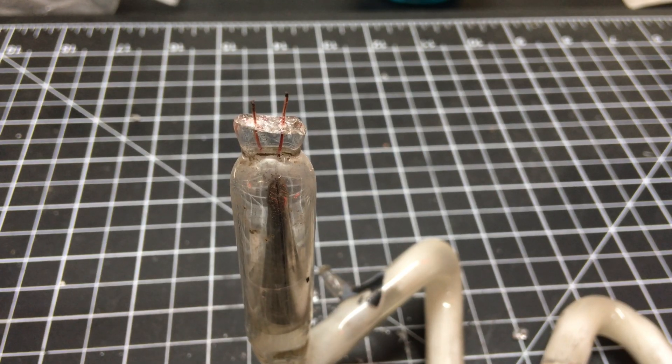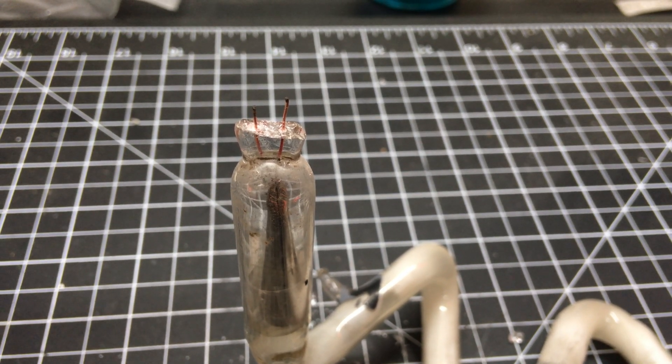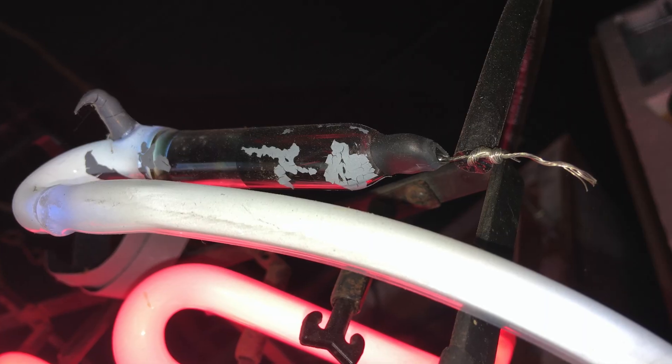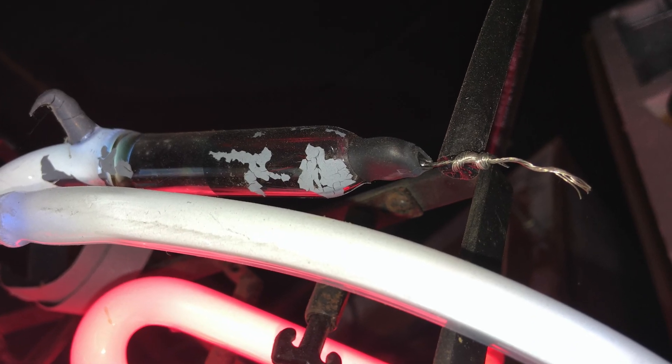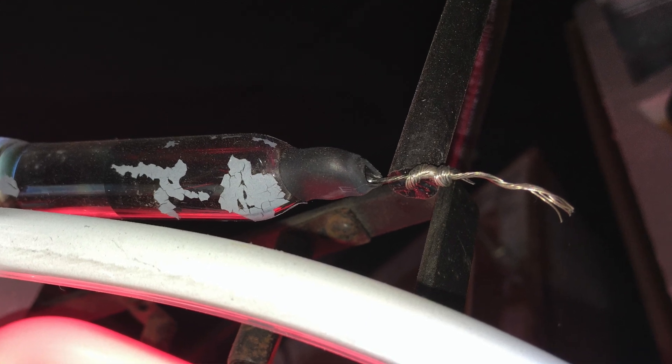One final option exists: chipping away glass from the electrode to expose wire that is buried in the glass. I have performed this repair successfully before, but this is considered a last-ditch effort due to the high possibility of failure.